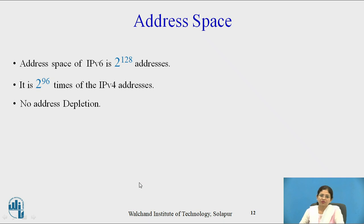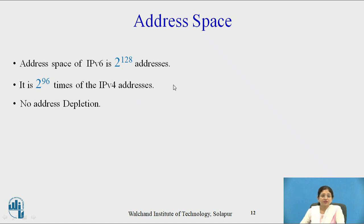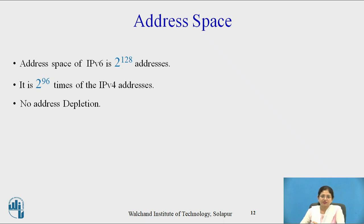Now let's see the very important topic of address space. Address space is the number of addresses provided by the protocol. IPv6 provides 2 raised to power 128 addresses, which is 2 raised to power 96 times more than IPv4 addresses. IPv4 provides 2 raised to power 32, that means more than 4 billion address spaces. We can imagine how big 2 raised to power 128 is — so definitely there is no address depletion problem with IPv6.